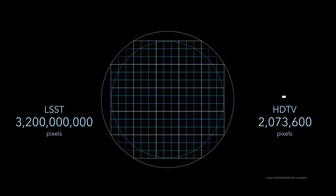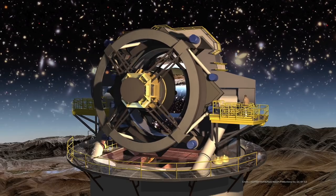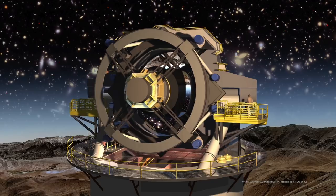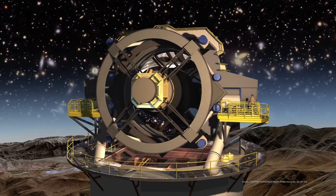And it takes a 3.2 gigapixel image. That's 3.2 billion pixels. The whole assembly makes for a very compact telescope that can quickly be pointed to the next position.